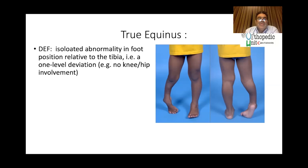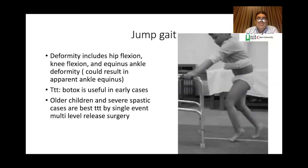Jumper's gait is the most common CP gait pattern, involving hip flexion and abduction, knee flexion, and ankle equinus. Early cases can be managed conservatively, but in older children they need single-event multilevel release — commonly tendo-Achilles, hamstring, and adductor release, plus/minus iliopsoas release if there is hip subluxation.